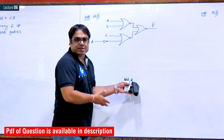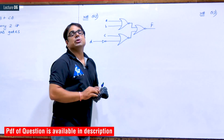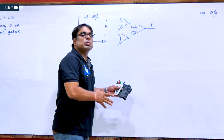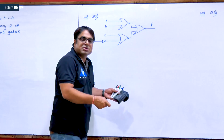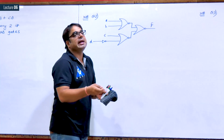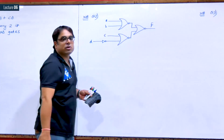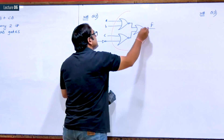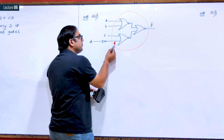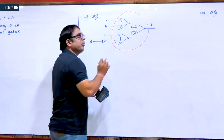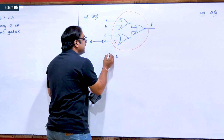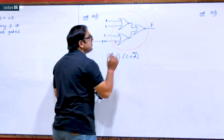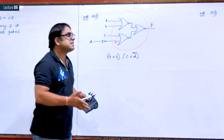The next question gives us a familiar structure and asks for the output of the logic gate. Two NOR gates' outputs are given to a NOR gate, so the output is of the format (A+B)·(C+D). Just note that the last input is not D but D complement, so the correct answer is (A+B)·(C+D').